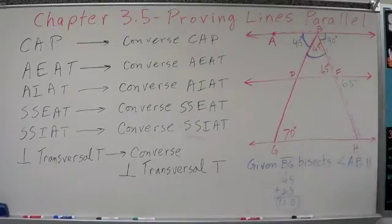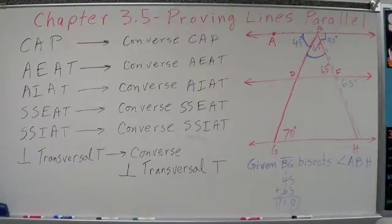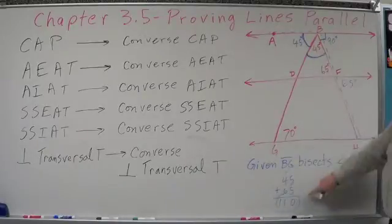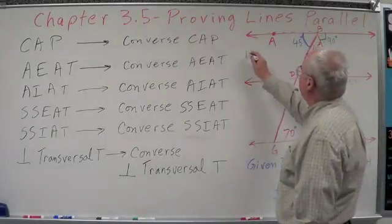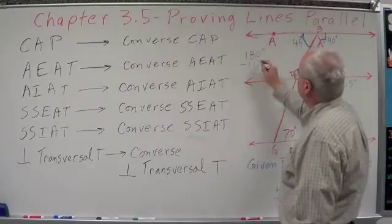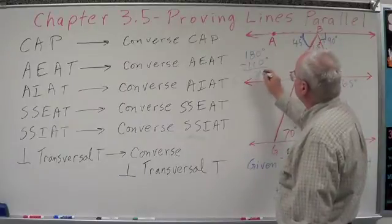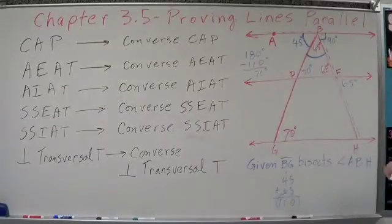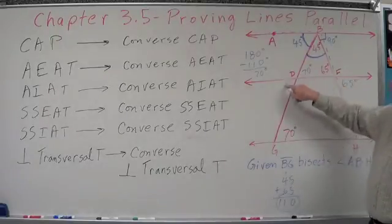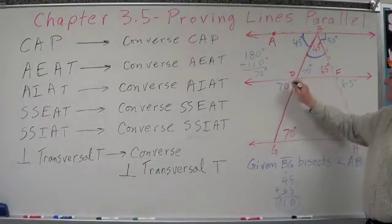What do we know about a triangle? What do we know about the angles of a triangle? 10th grade — angles of a triangle add up to 180. Well, if these two are 110, what's this one right there? That's going to be 180 minus 110, which equals 70 degrees. So this angle right here is 70 degrees. And by the vertical angle theorem, this angle is also 70 degrees.